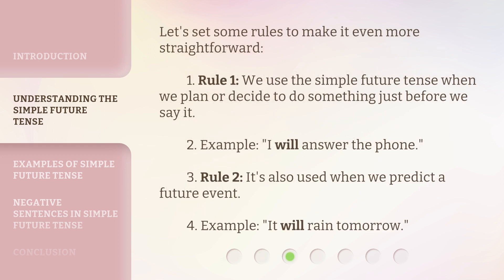Let's set some rules to make it even more straightforward. Rule 1: We use the simple future tense when we plan or decide to do something just before we say it. Example: 'I will answer the phone.' Rule 2: It's also used when we predict a future event. Example: 'It will rain tomorrow.'